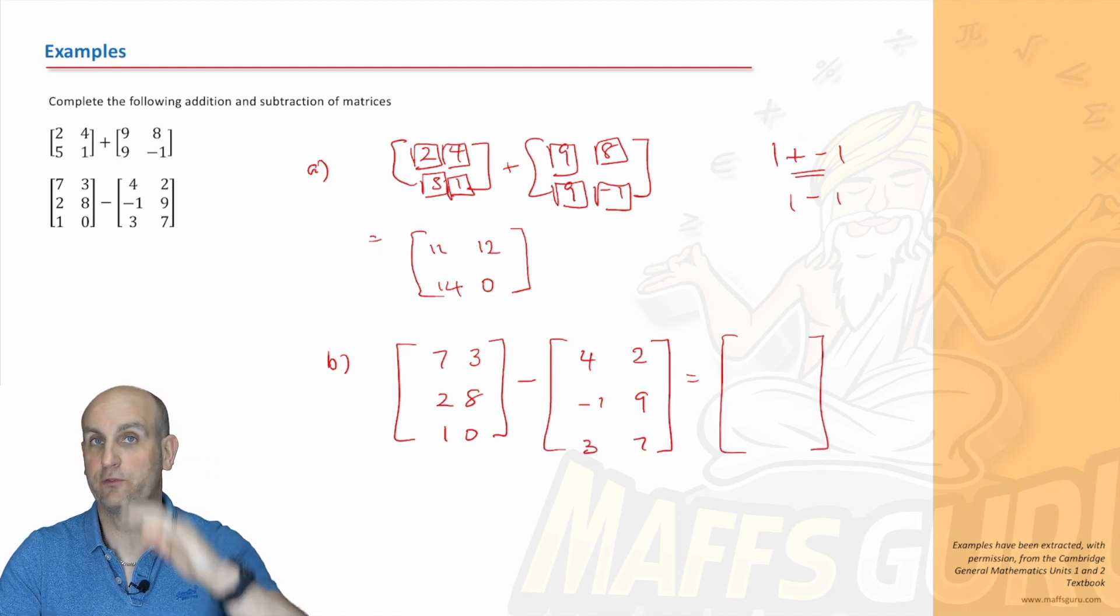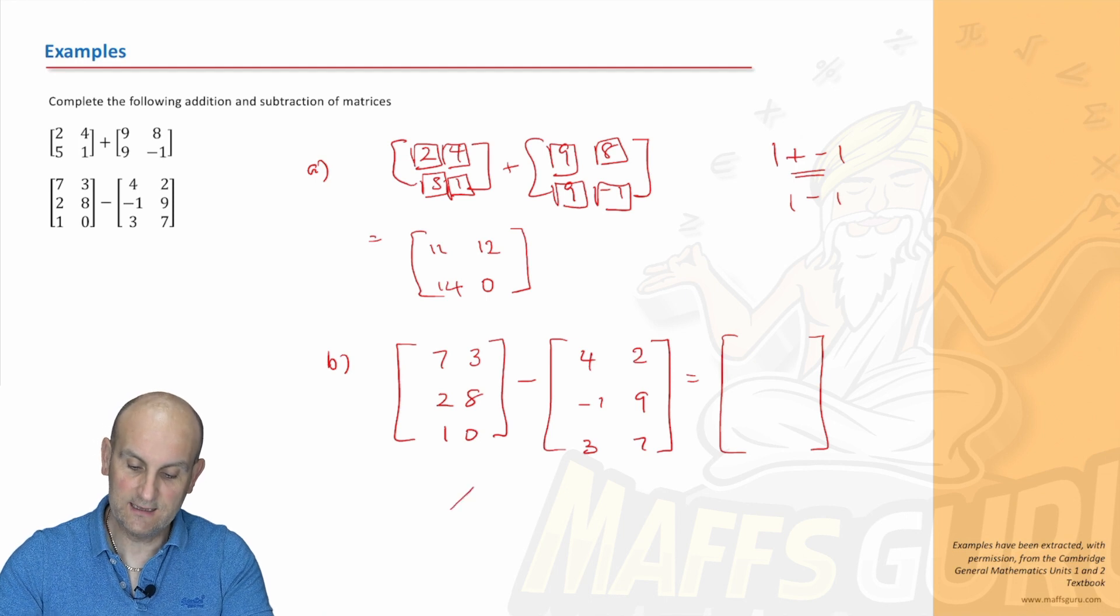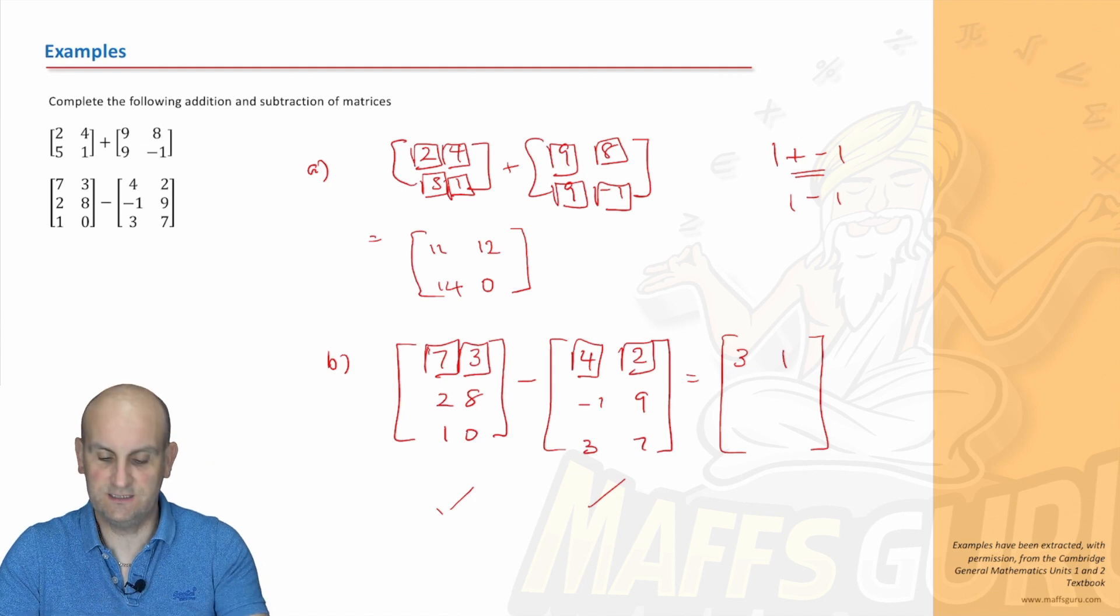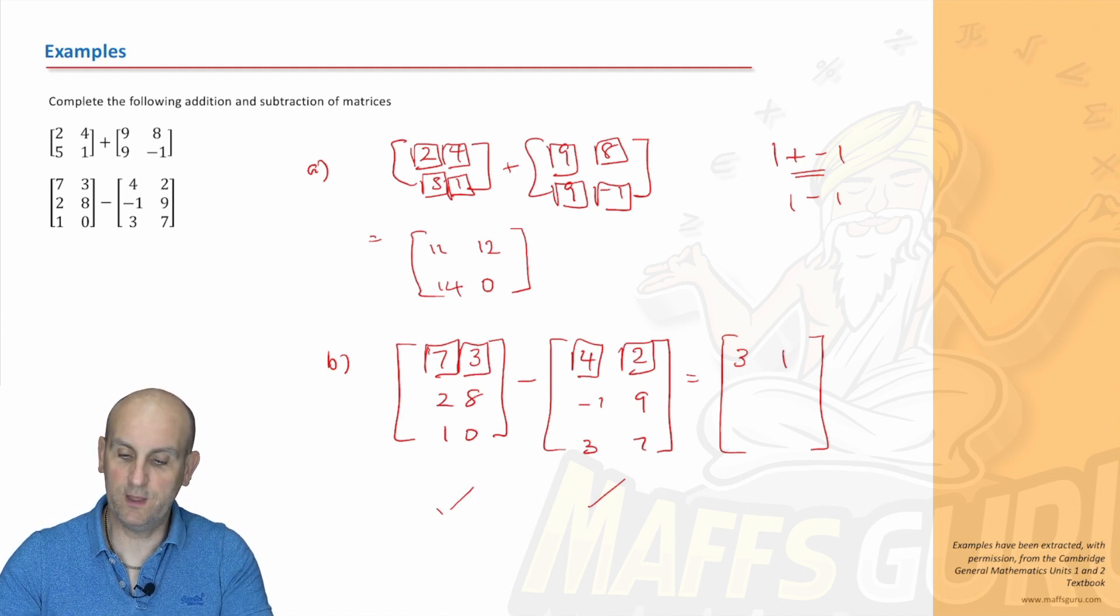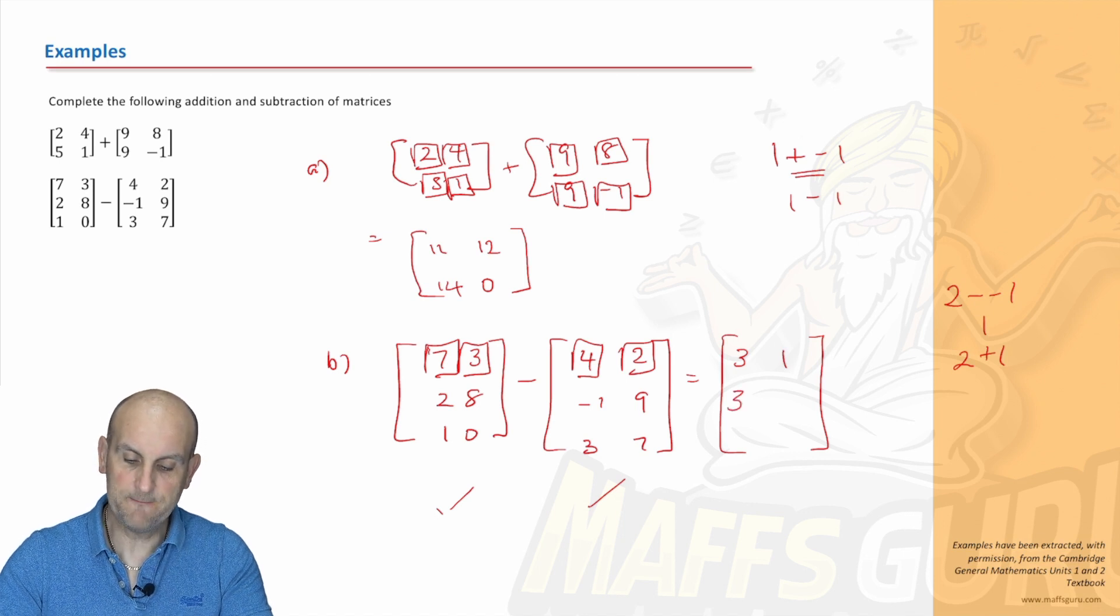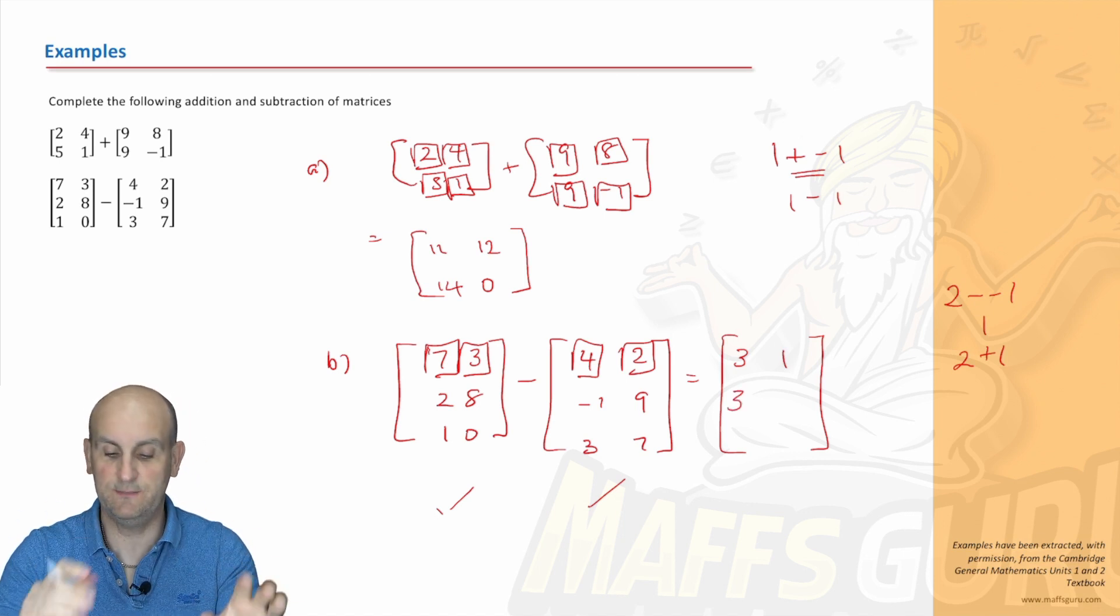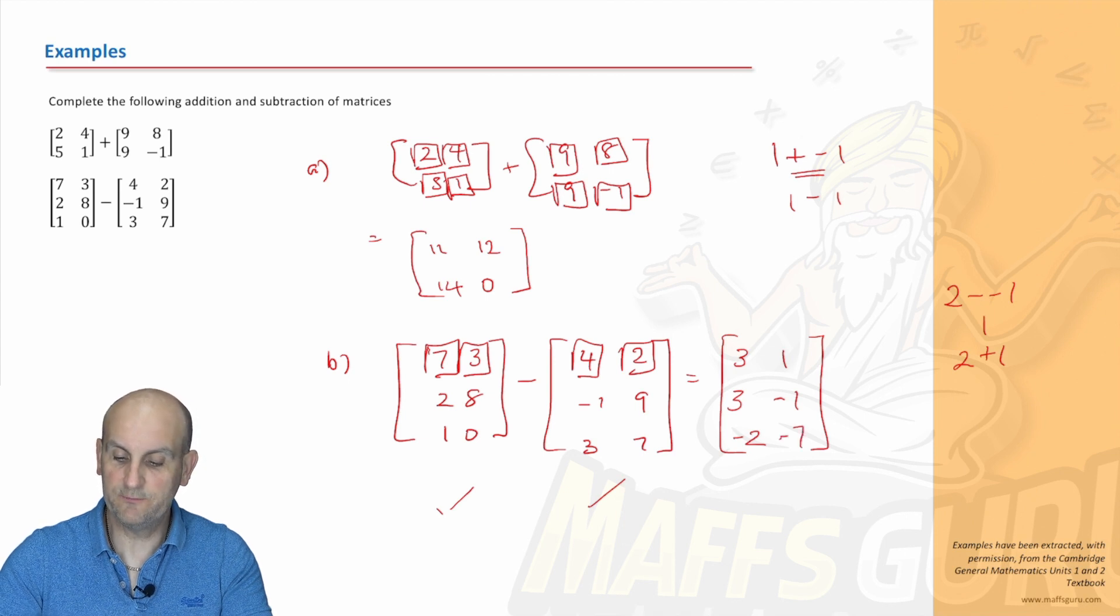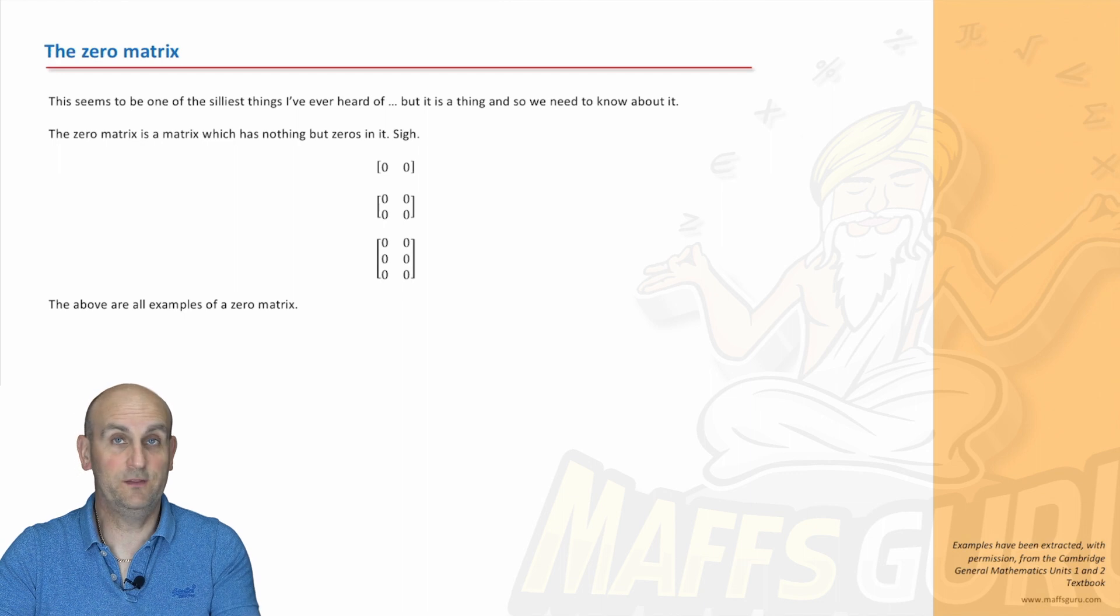I know the dimension is going to be a three by two because it's exactly the same. We know we can subtract these because they are the same order. So seven minus four is three, three minus two gives me one. Two minus minus one - a minus and a minus becomes a plus, so it becomes two plus one which gives me three. Eight minus nine is negative one, one minus three is minus two, and zero minus seven is minus seven.